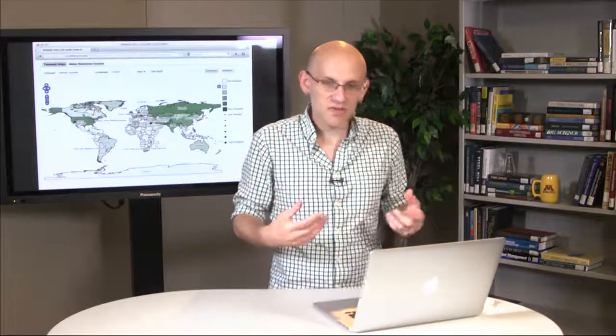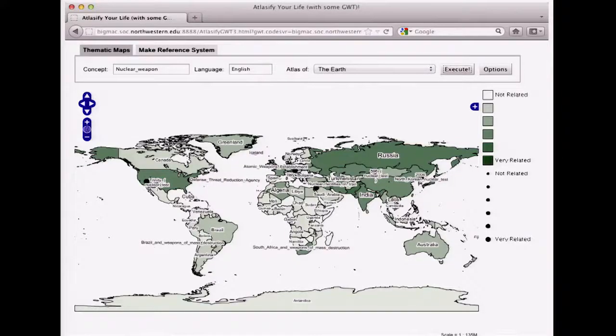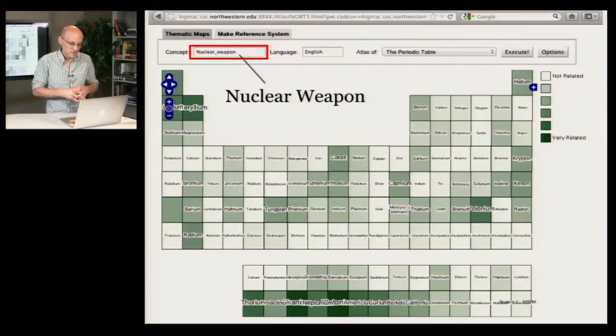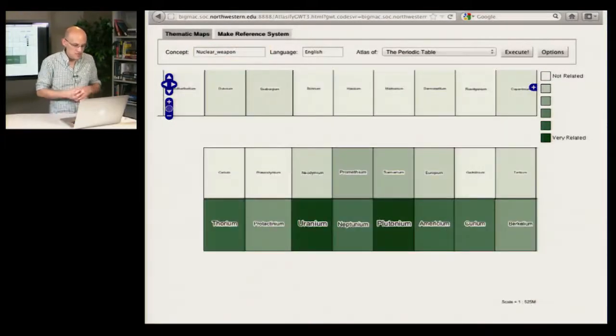So in our Atlasify project, in this research paper, we developed techniques that allowed us to use the exact same approaches we used to create this relatedness map, and use those approaches to create this map. Now as you can see here, this is the same query concept, nuclear weapon, but here it's visualized on the periodic table reference system rather than the world map reference system. We learned a little bit about this in module seven. This is an explicitly spatialized reference system, in this case using the periodic table.